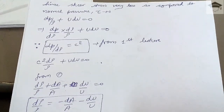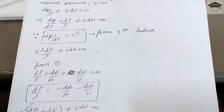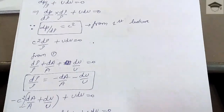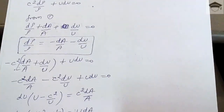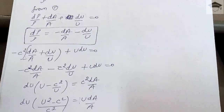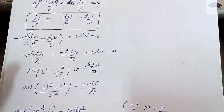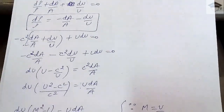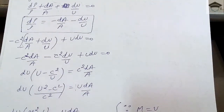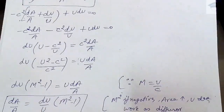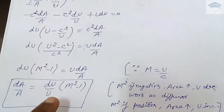From equation one, dρ/ρ = −dA/A − du/u. Substituting into c²·dρ/ρ + u·du = 0 gives c²·(−dA/A − du/u) + u·du = 0. Collecting terms with du: du·(u − c²/u) = c²·dA/A. Rearranging with Mach number M = u/c, we arrive at: du·(M² − 1) = u·dA/A, or equivalently dA/A = (du/u)·(M² − 1). This is the key area–Mach number relation.